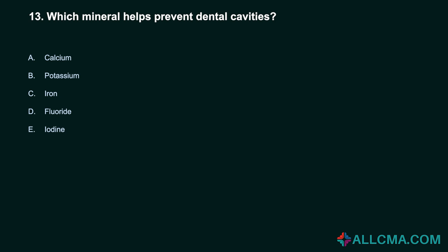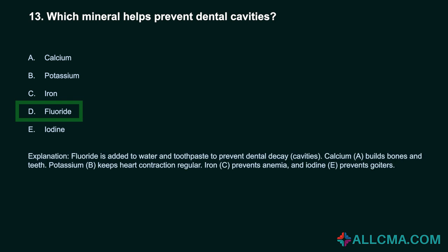Question 13: Which mineral helps prevent dental cavities? A. Calcium. B. Potassium. C. Iron. D. Fluoride. E. Iodine. Correct answer: D. Fluoride. Fluoride is added to water and toothpaste to prevent dental decay and cavities. Calcium builds bones and teeth. Potassium keeps heart contraction regular. Iron prevents anemia. Iodine prevents goiters.